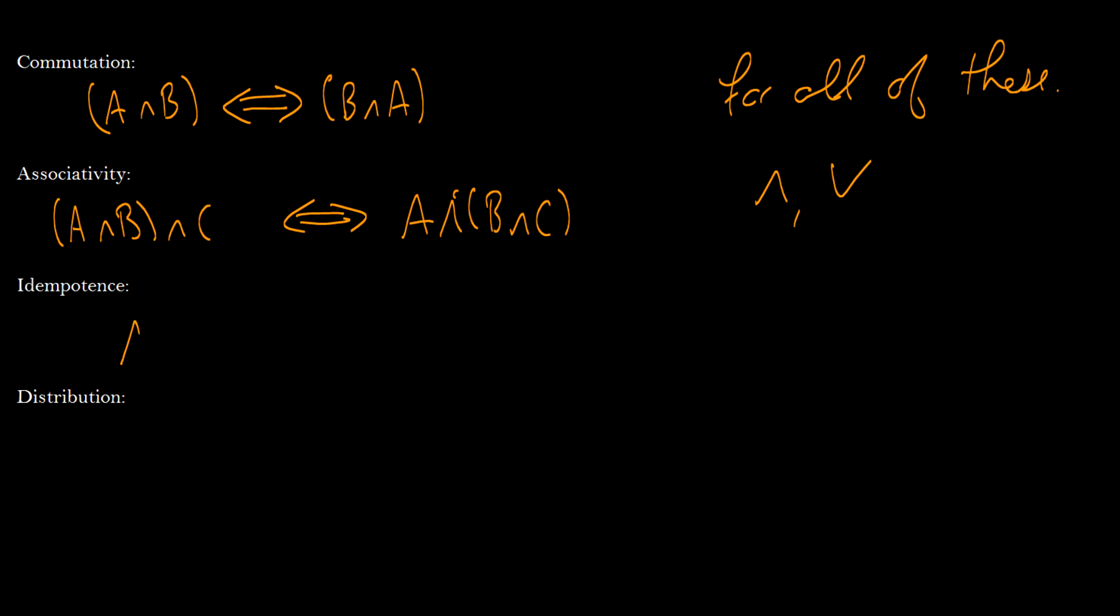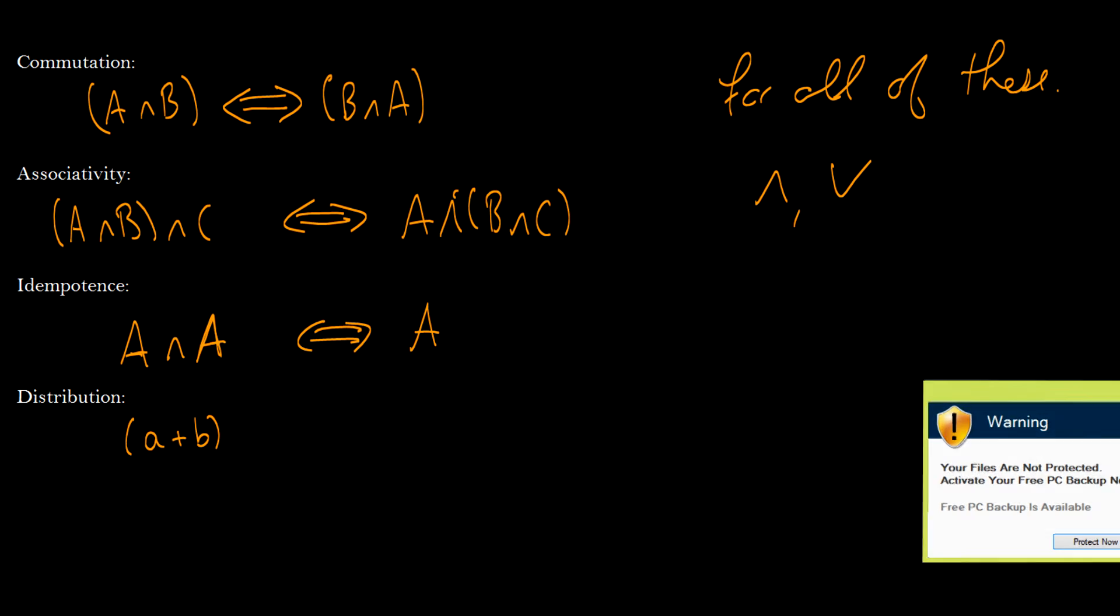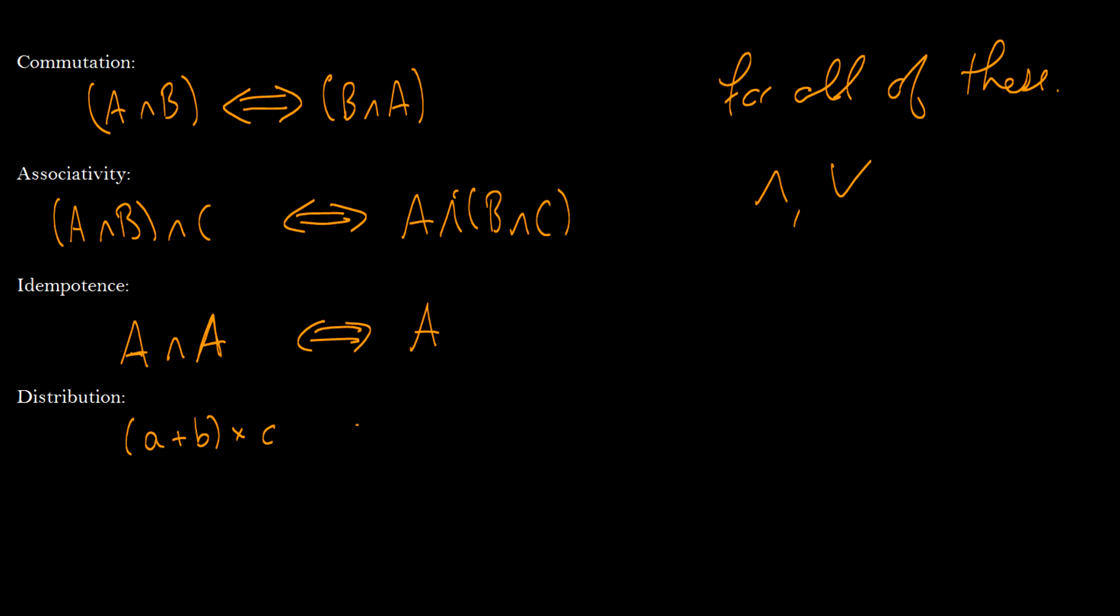Associativity. If we have a bracket around A and B and C, then this is the same thing as having a bracket around just B and C. And I should mention, for all of these, this works with and as well as or, so either or. I'm just going to write them with all with and, but you can do the same thing with or. Idempotence. If you have A and A, this is the same thing as just having A. You can prove these all with truth tables if you want to, but I would say they're fairly intuitive and distribution.